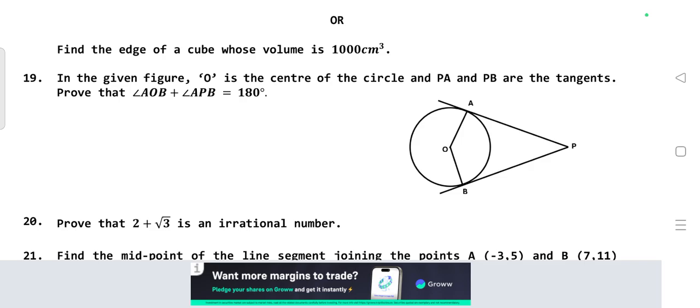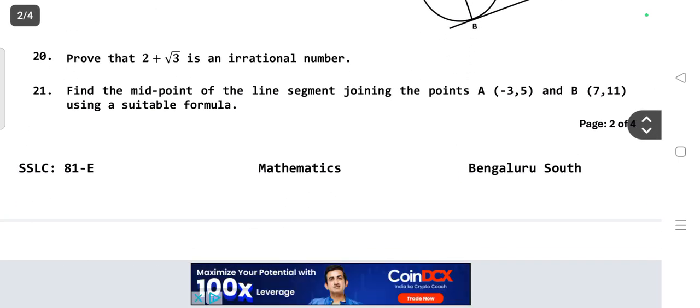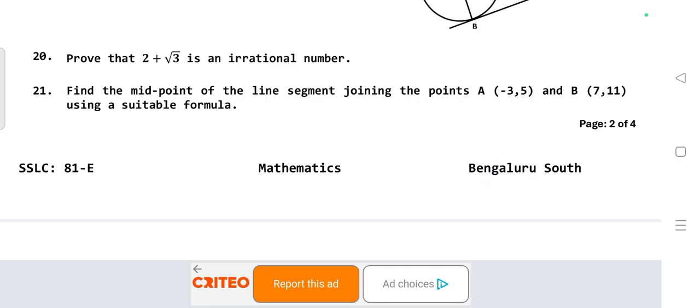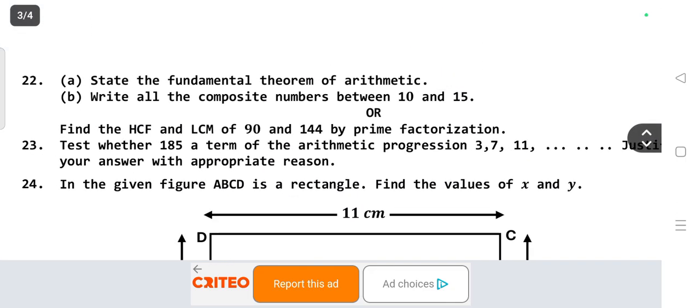In the given figure, O is the center of a circle and PA and PB are tangents. Prove that angle AOB plus angle APB equals 180 degrees. Prove that 2 plus 3 root 3 is an irrational number. Find the midpoint of the line segment joining A(-3,5) and B(7,11) using a suitable formula.